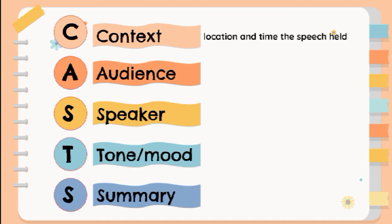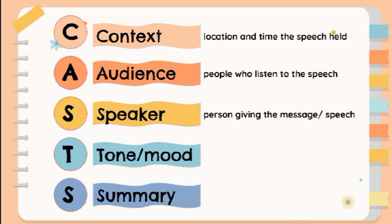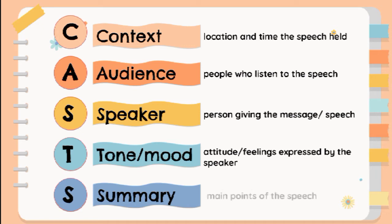Context is the location and time of the speech held. Audience is the people who listen to your speech. Speaker is the person giving the message or speech. Tone or mood is the attitude or feelings expressed by the speaker. And summary is the main points of the speech.